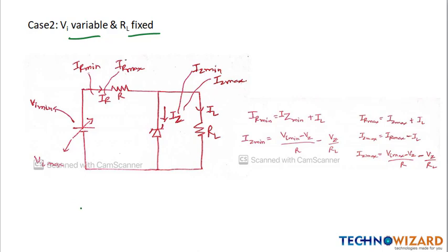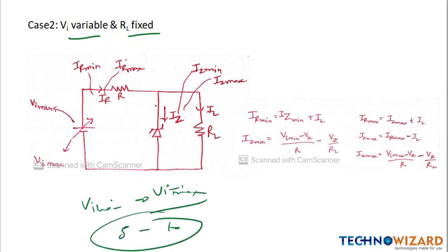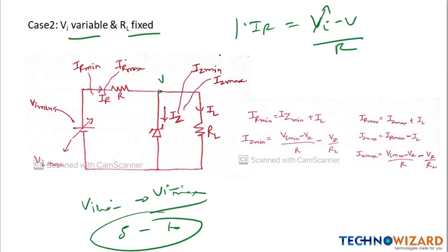Case 2 is when Vi is variable and RL is fixed. Vi will vary from Vi minimum to Vi maximum — for example, 5 to 10 volts. When Vi is varying, the resistor current IR will also vary, because IR = (Vi − Vz) / R. Similarly, zener current Iz will also vary between Iz minimum and Iz max, while IL remains constant since RL is constant.